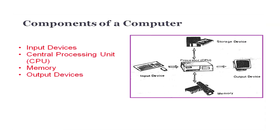The basic components of a computer are: input devices to accept input, the central processing unit which converts input into output, memory that stores the data being processed, and the output devices which help us to get the final result. Let us discuss these components one by one in detail.